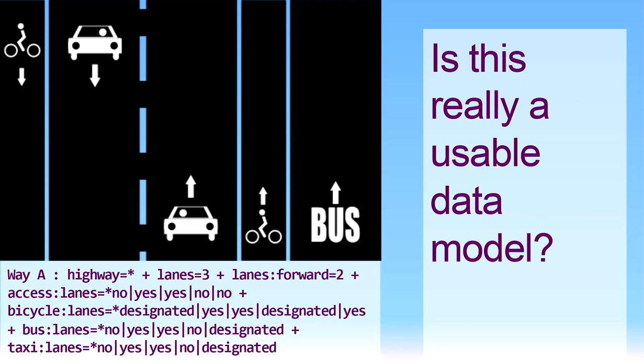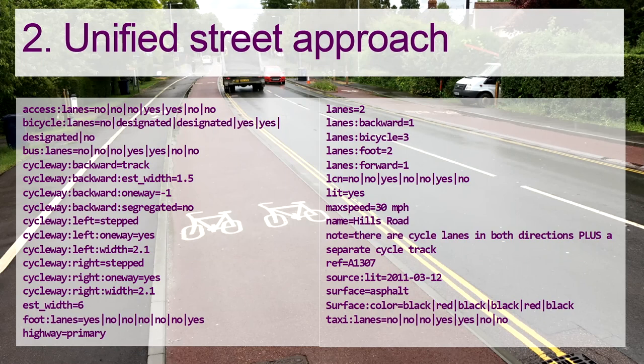Going back to my example, I had a go at tagging this road myself, and came up with: access:lanes=no, no, no, yes, yes, no, no; bicycle:lanes=no, designated, designated, yes, yes; cycleway:backward=track; cycleway:backward:width, and so on. And I still can't properly represent the fact that the left contraflow goes that way. No one is going to use this. So we essentially have two models, neither of which really works: a unified model that's very difficult to understand and will break, and a multiple-lanes model with its own problems.